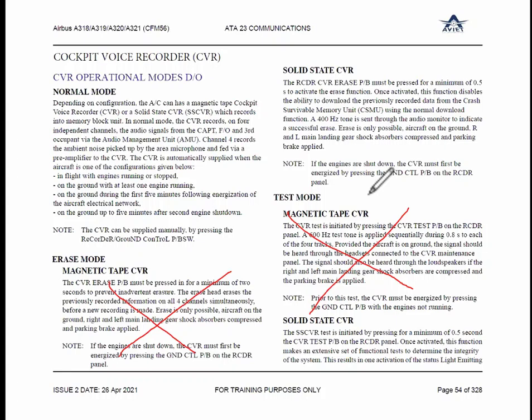Everyone knows where the CVR is located — it is in the THS compartment, because that is considered the safest place after an aircraft incident, accident, or crash. Orange color, fluorescent body, and an ULB — Underwater Locator Beacon — is mounted on it, so they can sense the radio signals. From 6,000 meters down the sea, you can receive the signals. It is able to transmit the signal for the next 90 days.